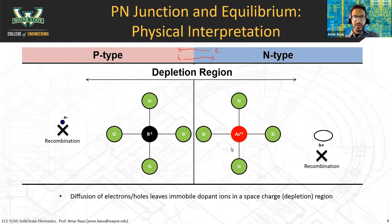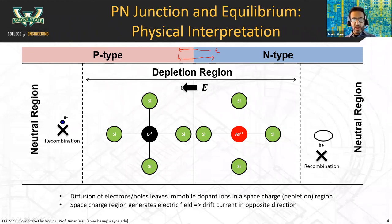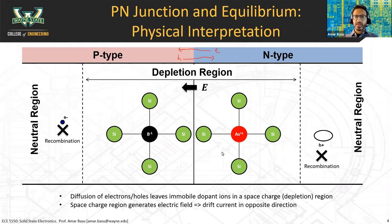The N-type material has effective positive charge because the arsenic dopant ions have an effective positive-one charge. Boron ions have a negative-one effective charge. There are many of these charges. There's a whole bunch of positive charges on the N side and a whole bunch of negative charges on the P side. Whenever you have positive charges and then negative charges, that creates an electric field pointing from positive to negative. The depletion region — also called the space charge region — is depleted of mobile carriers and contains only these immobile ions.